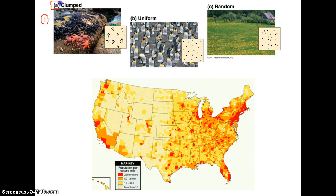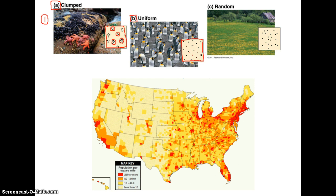Letter A shows a clumped distribution, where individuals — represented by dots — are grouped together in various parts of the area. Letter B shows uniform distribution, where individuals are spread apart from each other at an equal distance, so they're all spread out evenly across the area.